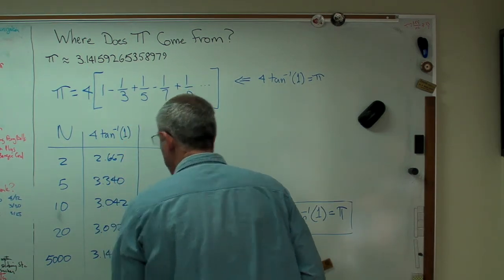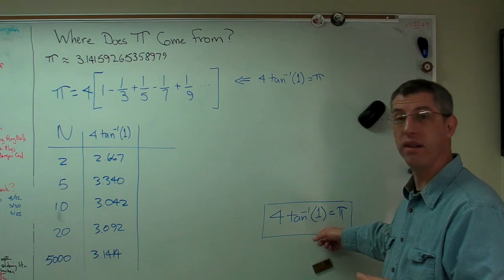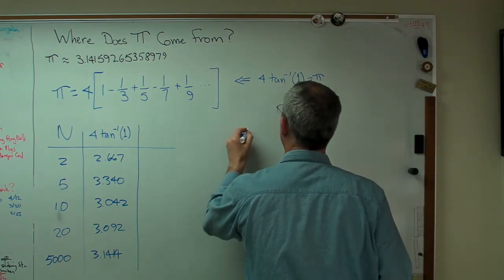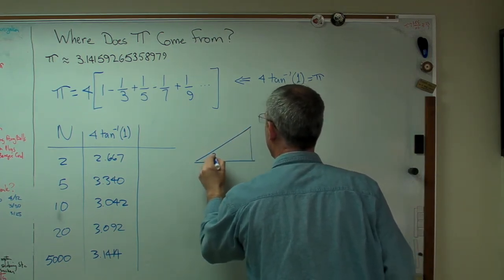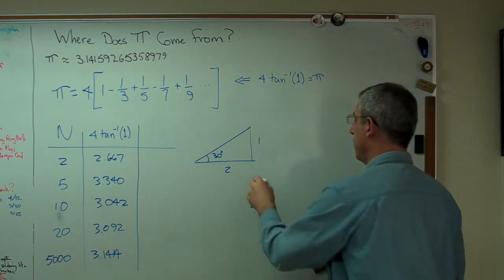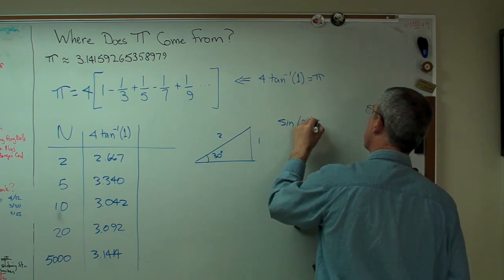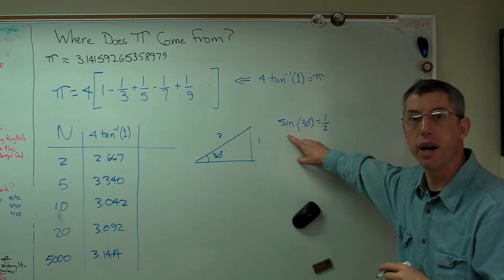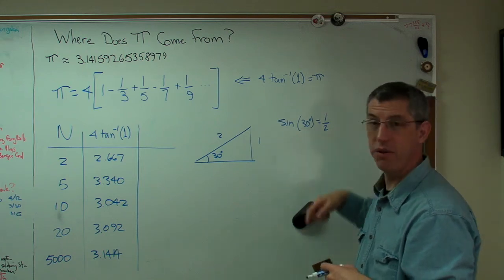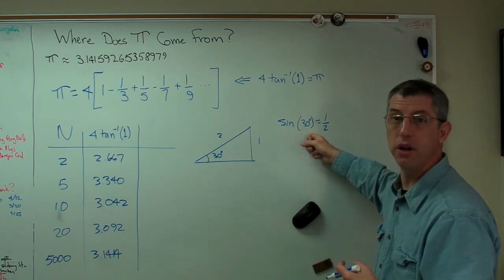But it would be better if you didn't have to do that much work to calculate this. Maybe there's another expression kind of like this that would converge faster. And there is. Let's look at 30 degrees. Turns out that's 1 and that's 2. What we're trying to do here is try to find an angle that we can define in terms of pi that has some known trig value. We don't want to have to use pi to calculate pi. That's a circular argument. That doesn't work.